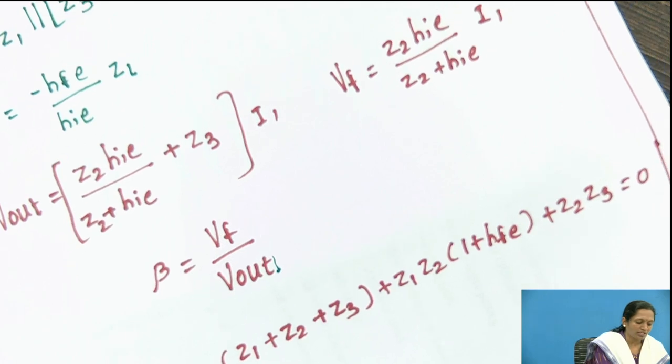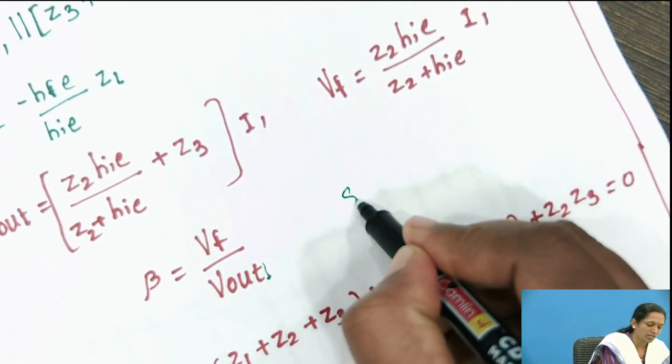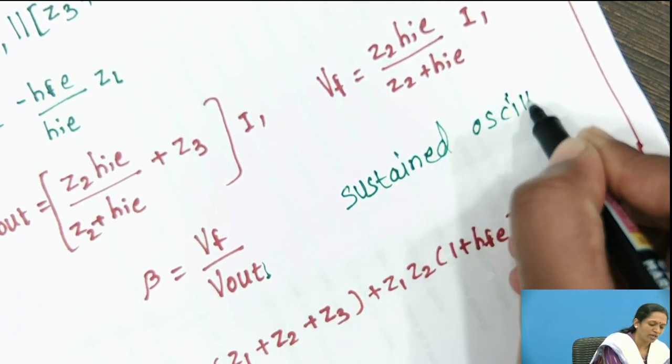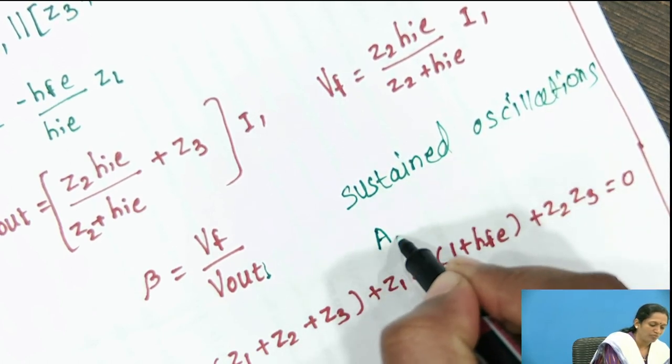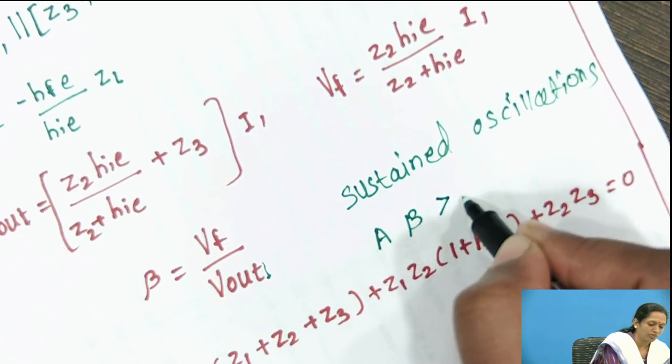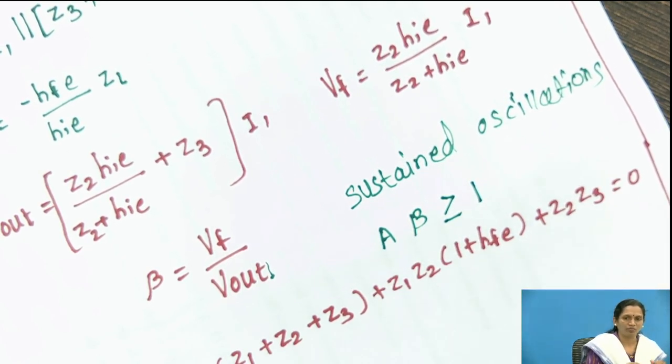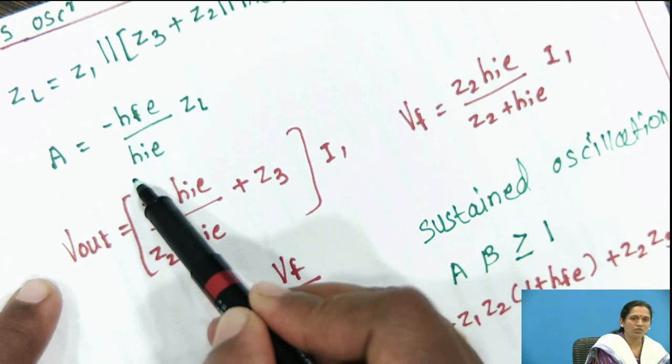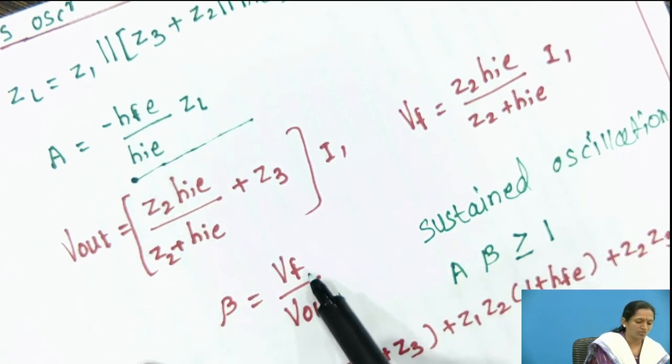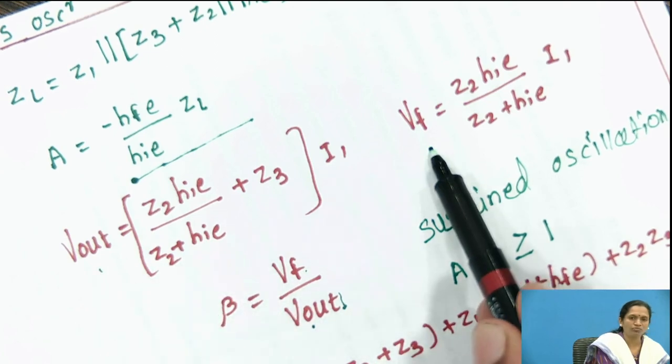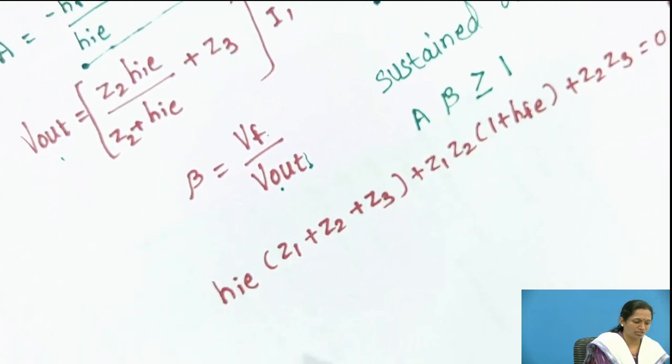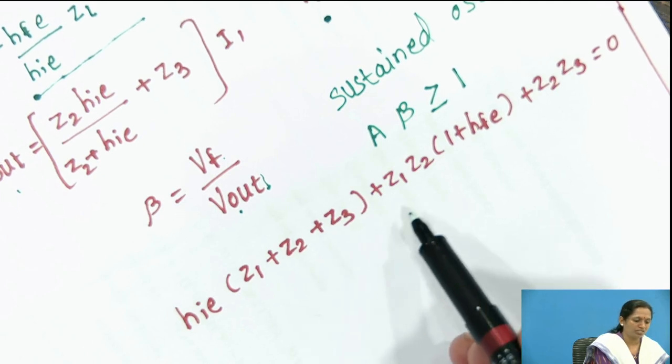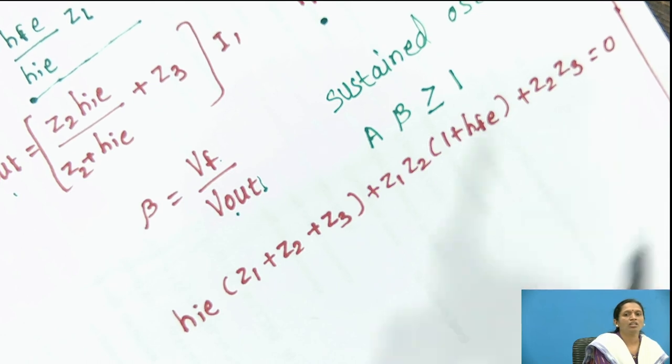Now, I am interested to get the sustained oscillations. And as you know that for sustained oscillations, beta AV should be greater than or equal to unity. Once you put the value of A as minus HFE by HIE into ZL and beta value is VF by Vout. VF and Vout are known to you. Once you put these values, you will come across the equation nothing but HI into Z1 plus Z2 plus Z2 into bracket 1 plus HFE plus Z2 Z3 equal to 0.